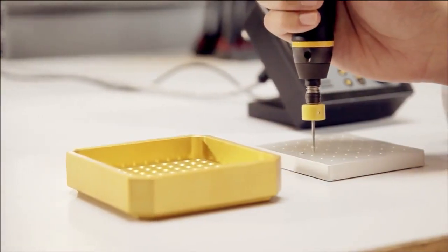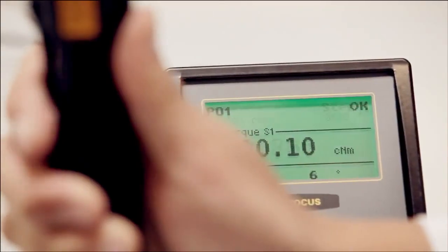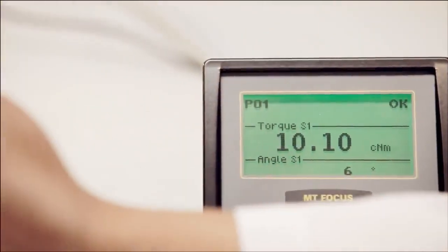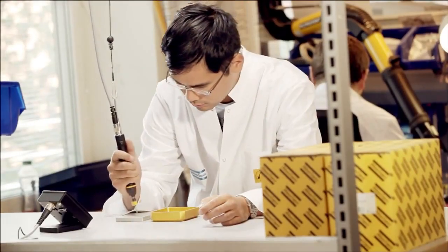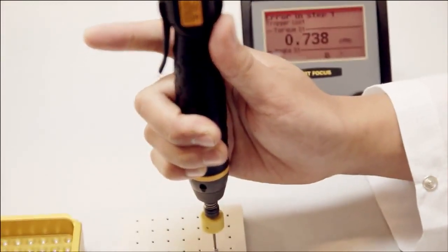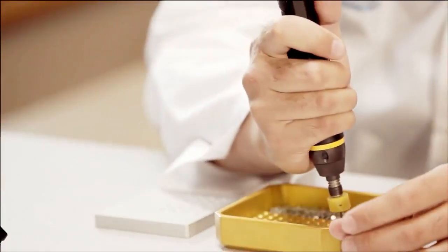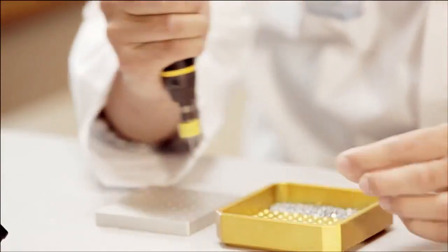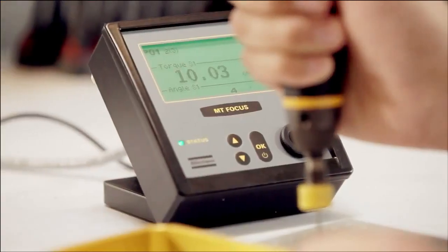The system has buzzer sound and colour display, with green for OK tightening, red for not OK tightening, and blue for batch OK.